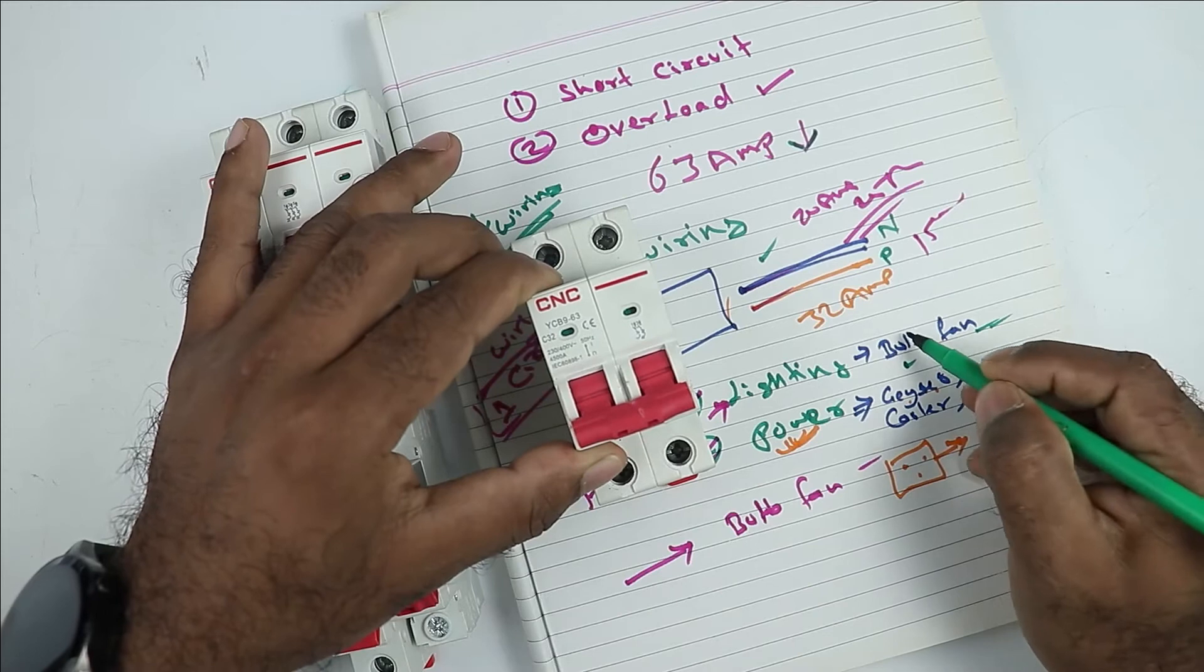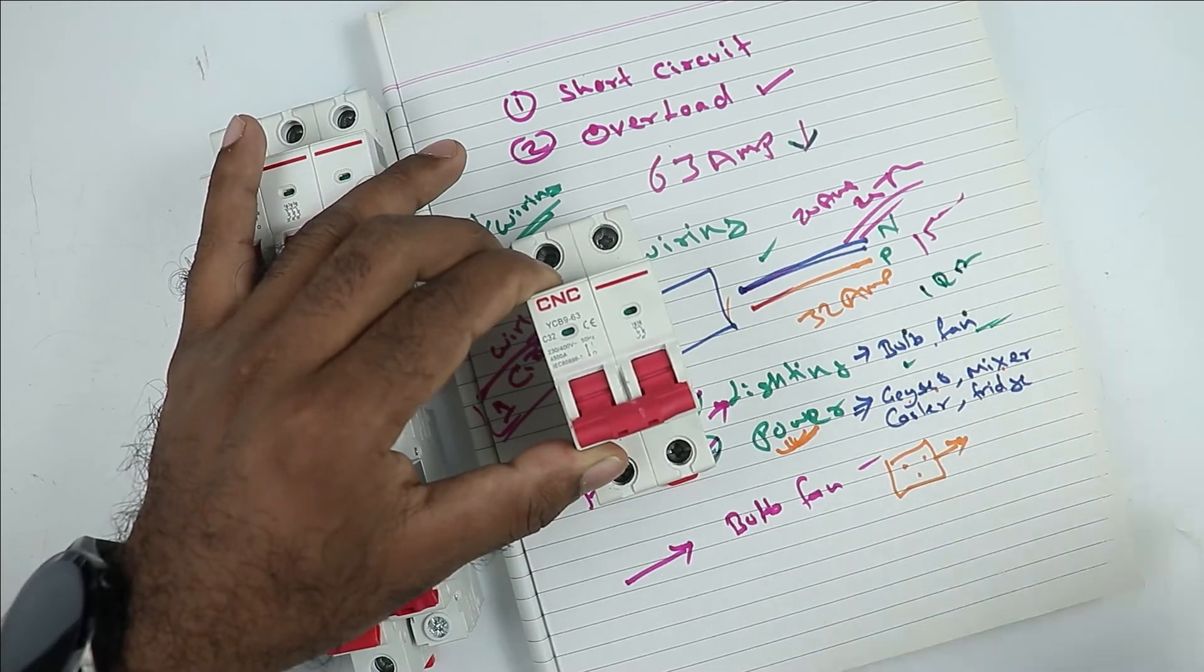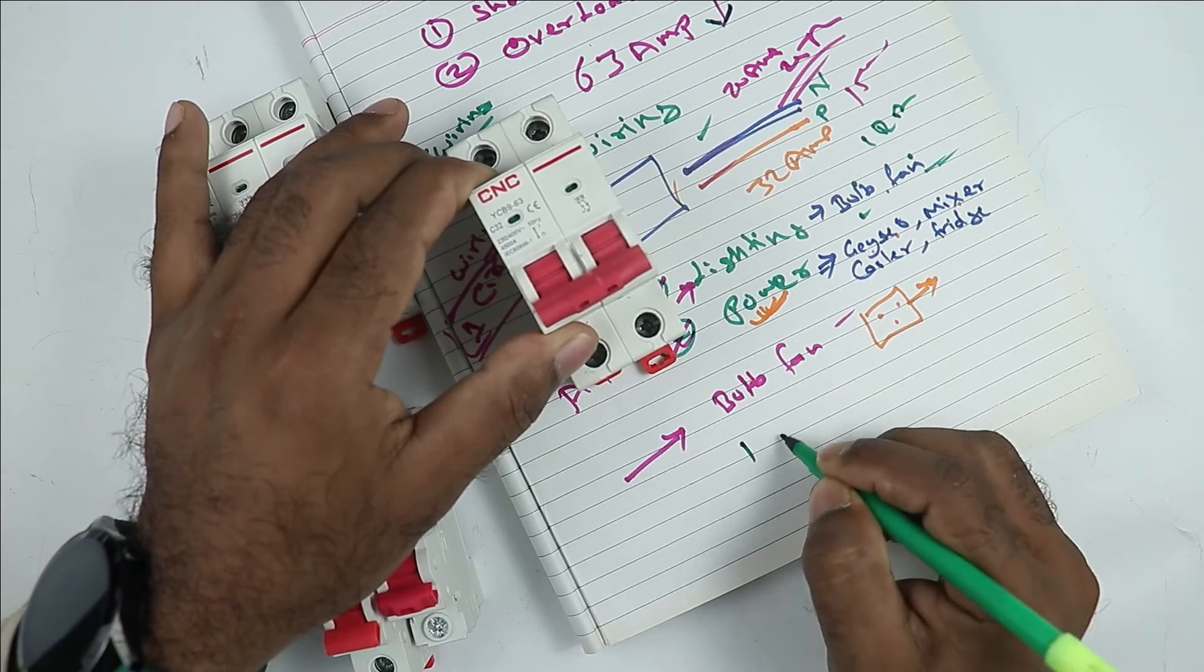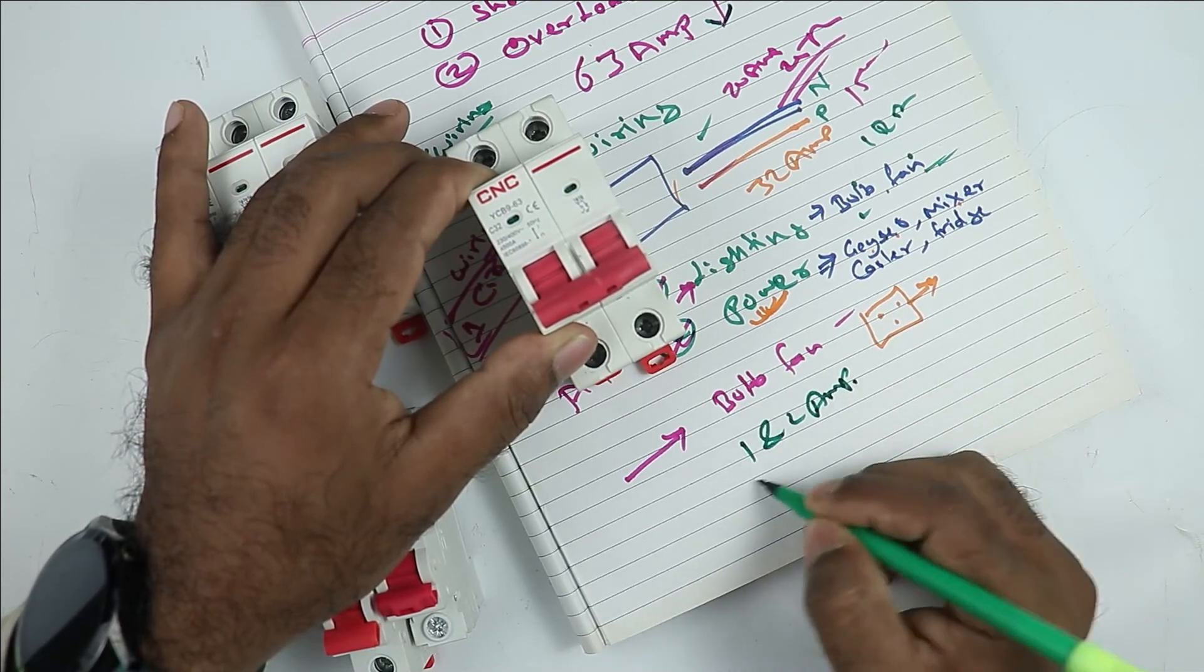Normally on MCB, the load is of bulbs and fans. If you turn on all the bulbs and fans in your home, then maximum 1 ampere to 2 ampere current will flow through MCB.